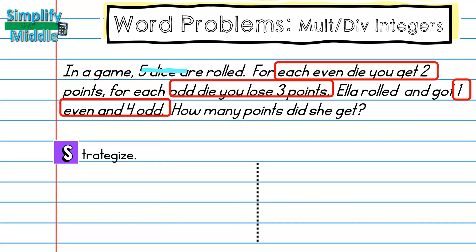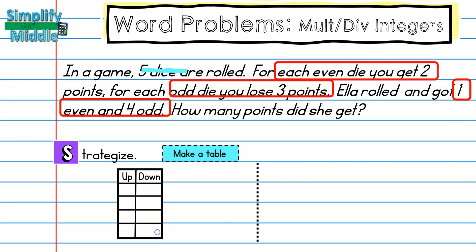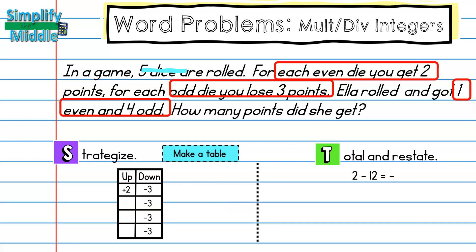I'll strategize using a table, labeling it 'up' and 'down' for points. She got one even, so she went up two points. She got four odd, so that's minus three, minus three, minus three, minus three. For the total and restate: she had two, plus four sets of negative three — that's two minus twelve — equaling negative ten. Ella has a total of negative ten points.